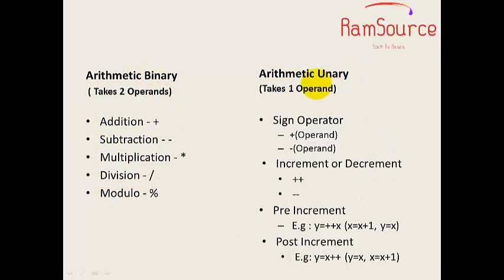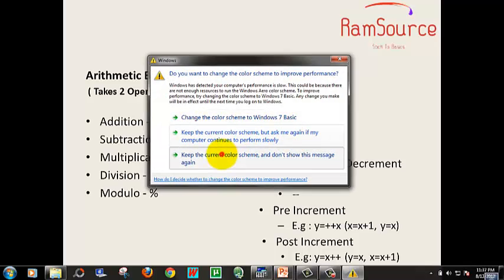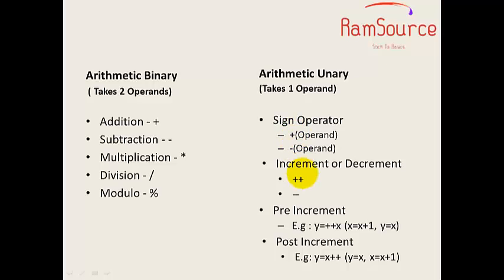Next is arithmetic unary. It is just opposite to binary — it takes only one operand. This one operand takes a plus or minus sign: plus five or minus five, plus six or minus six. It takes only one operand. And here, increment or decrement: plus-plus and minus-minus are used for increment and decrement — pre-increment, pre-decrement, post-increment, and post-decrement. If you have a program, you will have a better understanding.